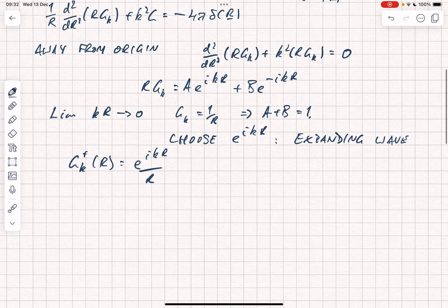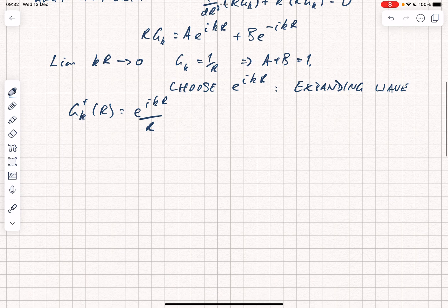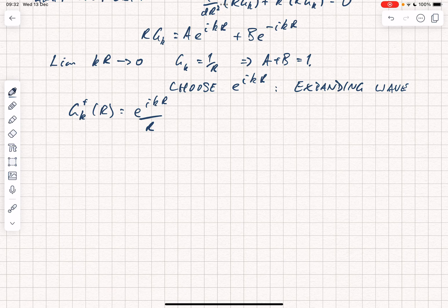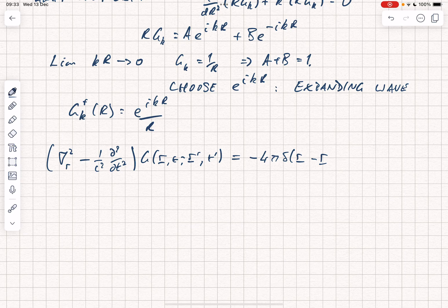Now to understand the time behaviour of our potentials, we need to find the corresponding time-dependent Green's function. We have del squared with respect to r minus 1 over c squared d2 by dt squared acting on g of r t r prime t prime. That equals minus 4 pi delta of r minus r prime delta of t minus t prime.